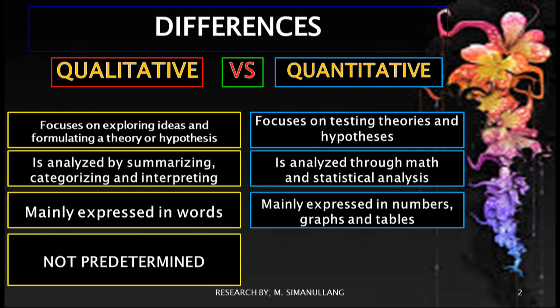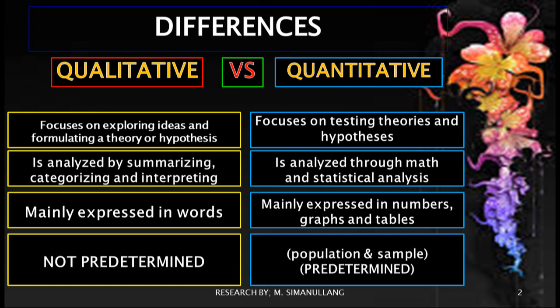Dealing with how the sample is chosen: in qualitative research it is not predetermined, while in quantitative research the population and sample must be predetermined first. Now we are going to cover the differences in taking or choosing the sample in both qualitative and quantitative research.